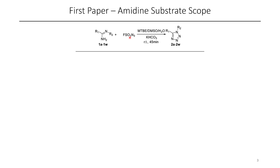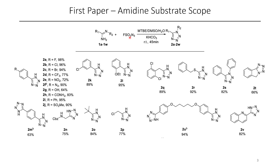In this case, because we have a guanidine or an amidine as our starting material, we're afforded with tetrazoles. The scope of this chemistry is quite good — if you'd like to see more examples, you can check out the full paper. Halogens as well as ethers were well-tolerated.